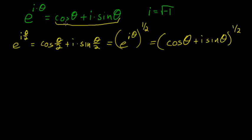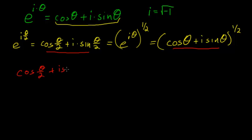So essentially, the cosine of theta over 2 plus i times the sine of theta over 2 is equal to the square root of the cosine of theta plus i times the sine of theta.